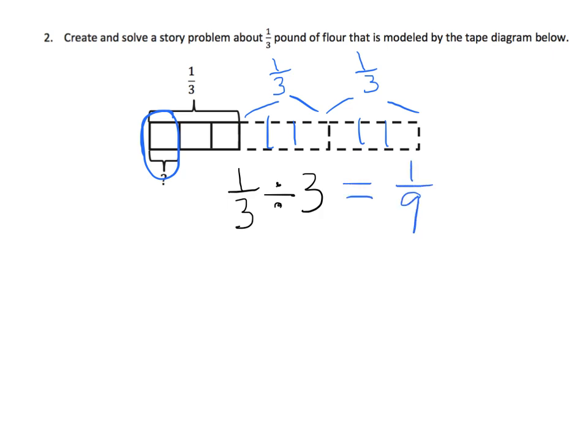that one little piece right here is going to equal 1 ninth. It's 1 out of 9 pieces, because you can see there's 9 pieces total, and this is 1 out of 9. So we can see that this is our expression, our equation, numerical equation, and here's our answer, 1 ninth.